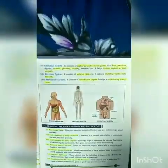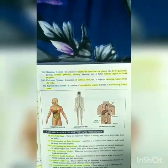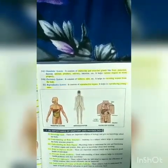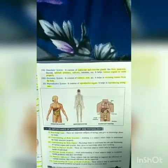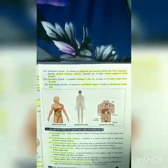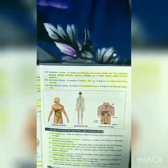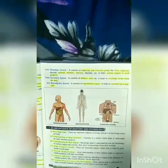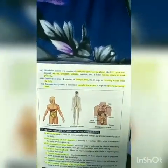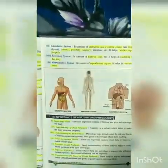The glandular system consists of endocrine and exocrine glands and organs like the liver, pancreas, thyroid, adrenal, pituitary, and salivary glands — it helps various organs to work properly. The excretory system consists of kidneys, skin, etc., and helps in excreting waste from the body. The reproductive system consists of reproductive organs and helps in reproducing offspring.